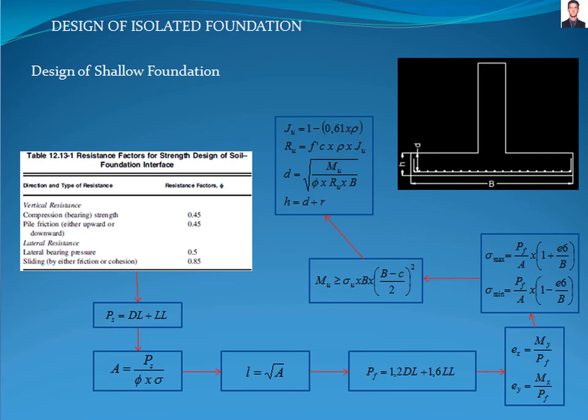The steps to design a shallow foundation are divided into nine steps. The first step is to determine the proper bearing capacity of the soil because it is a seismic design. Table 12.13 of the ASCE standard has a reduction factor that must be multiplied by the nominal bearing capacity of the soil from geotechnical investigations to account for the effect of liquefaction during a seismic event.